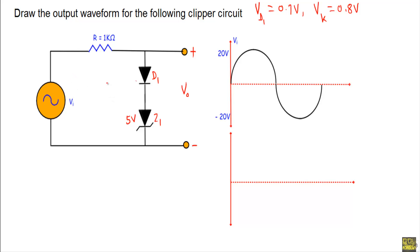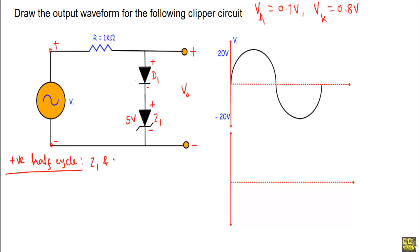Now let me show you how to draw the output waveform. Consider the positive half cycle. During the positive half cycle of the applied voltage, this terminal should be positive or at higher potential and this terminal should be negative or at lower potential. This negative terminal will be connected with the N-side of the diodes, and the positive terminal will be connected with the P-side of the diodes. So input voltage V should put D1 and Z1 in forward bias.